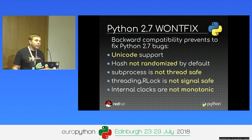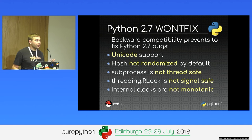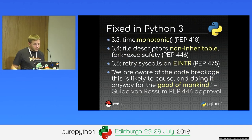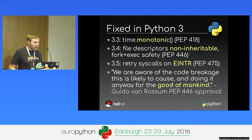Another example: clocks in Python 2 use system time, so during DST changes — winter time or summer time — or if a system administrator manually changes the time, your application may crash. The solution is to use a monotonic clock, which only ever increases with no jumps forward or backward. In Python 3.3 I added the time.monotonic() function, and we gradually modified Python internals to use the monotonic clock.